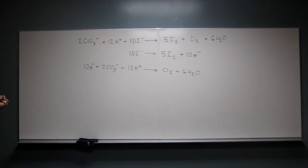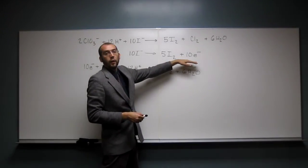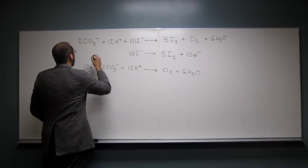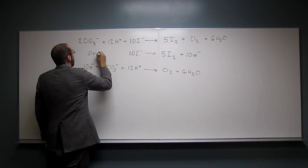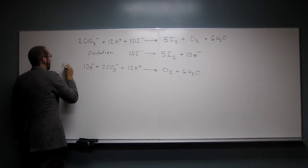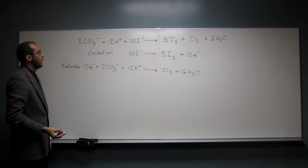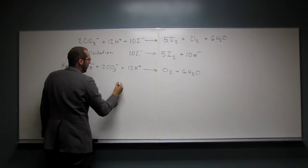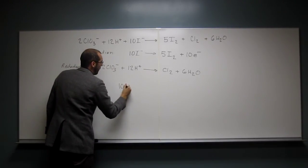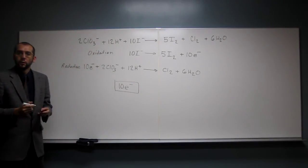So what's happening? Losing electrons here, so that's the oxidation half-reaction, and this is the reduction. Not that that matters, but it asks you how many electrons are being transferred? Ten electrons.